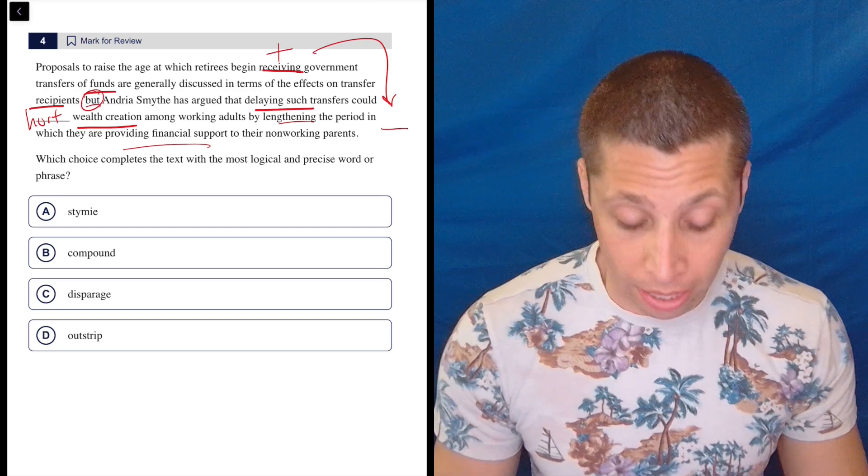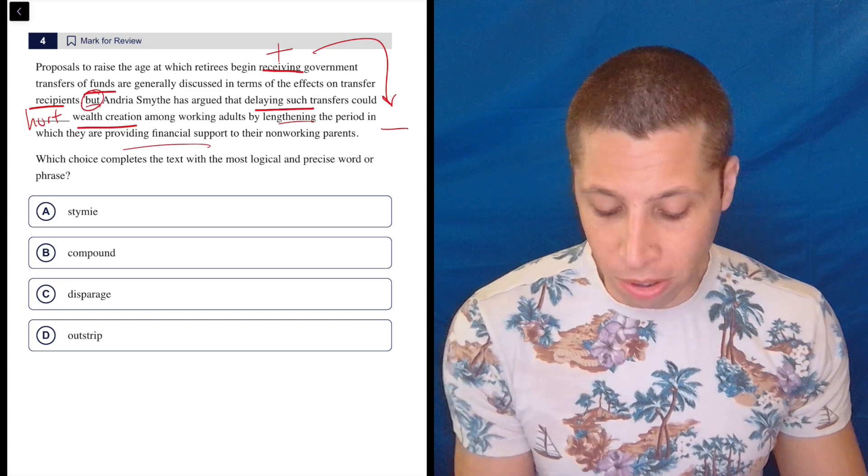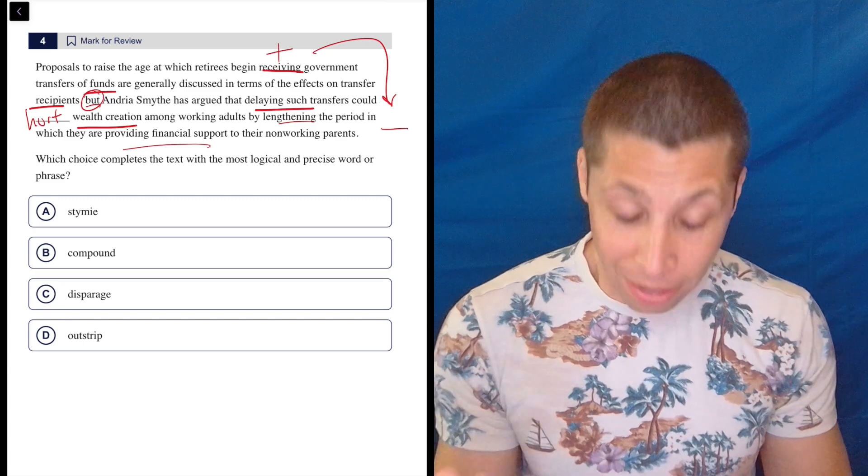So that's the summary thinking there. And then if we go to the choices, we have a lot of tough words and a lot of them kind of overlap.